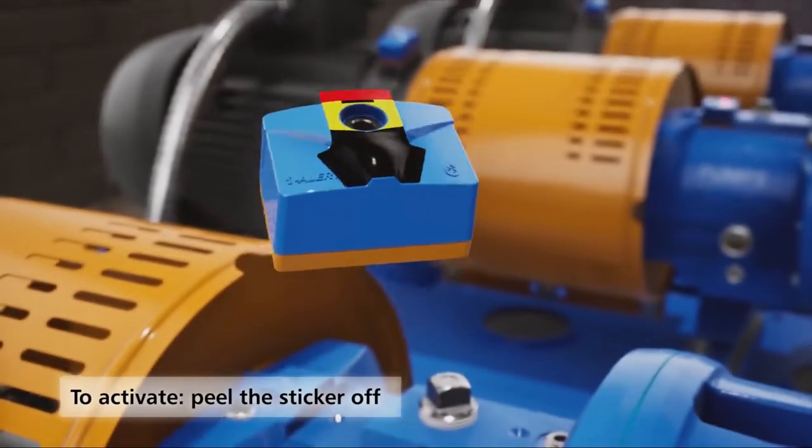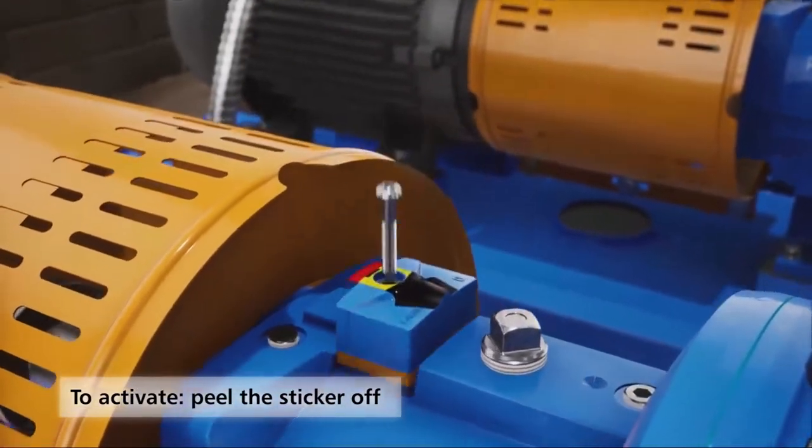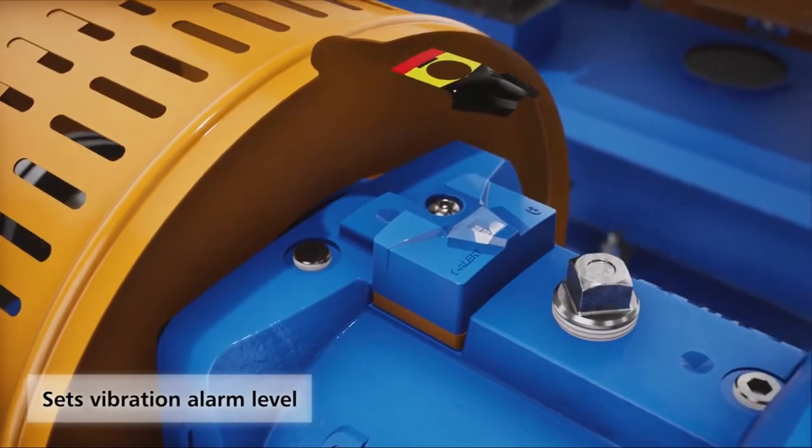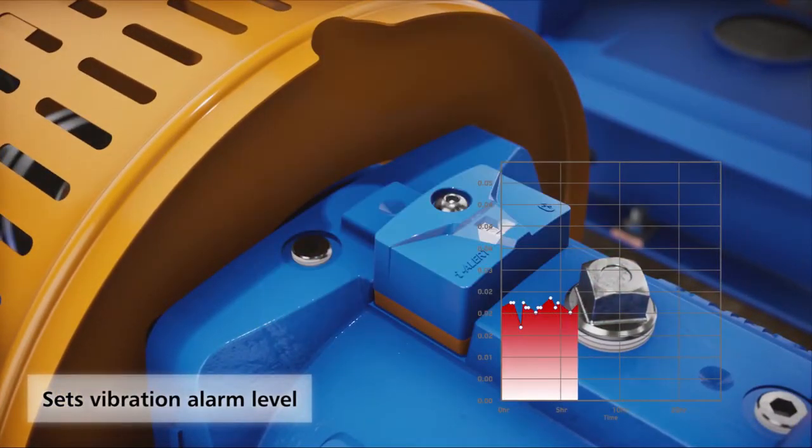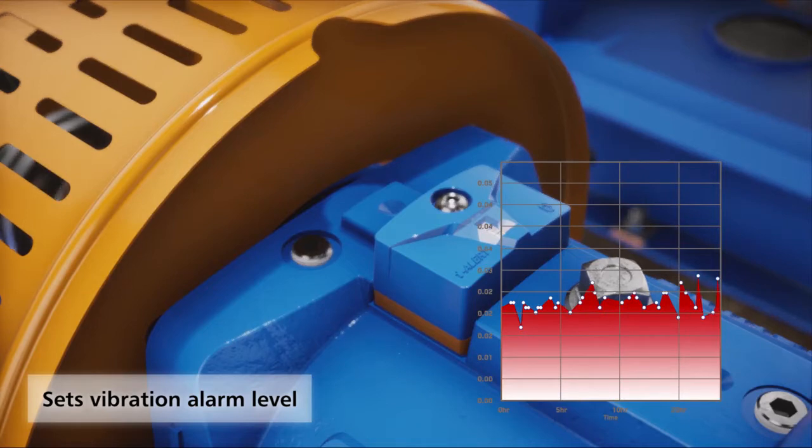When activated, the iAlert 2 takes baseline vibration readings for 25 equipment run hours. This baseline is used to set high vibration alarm levels. No programming is required by the installer.